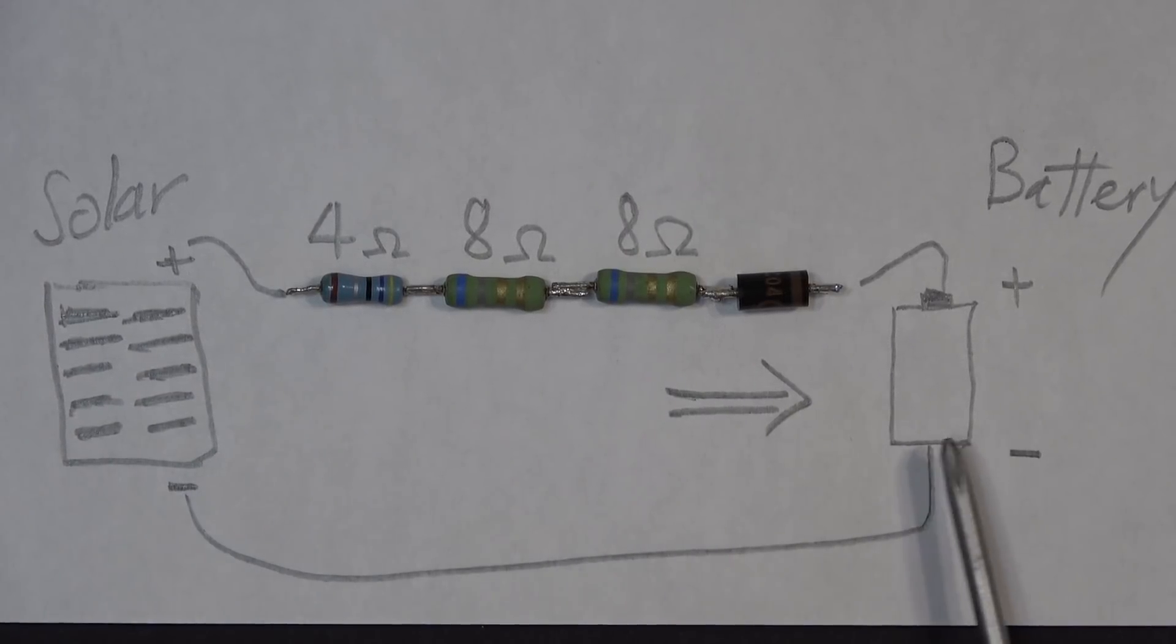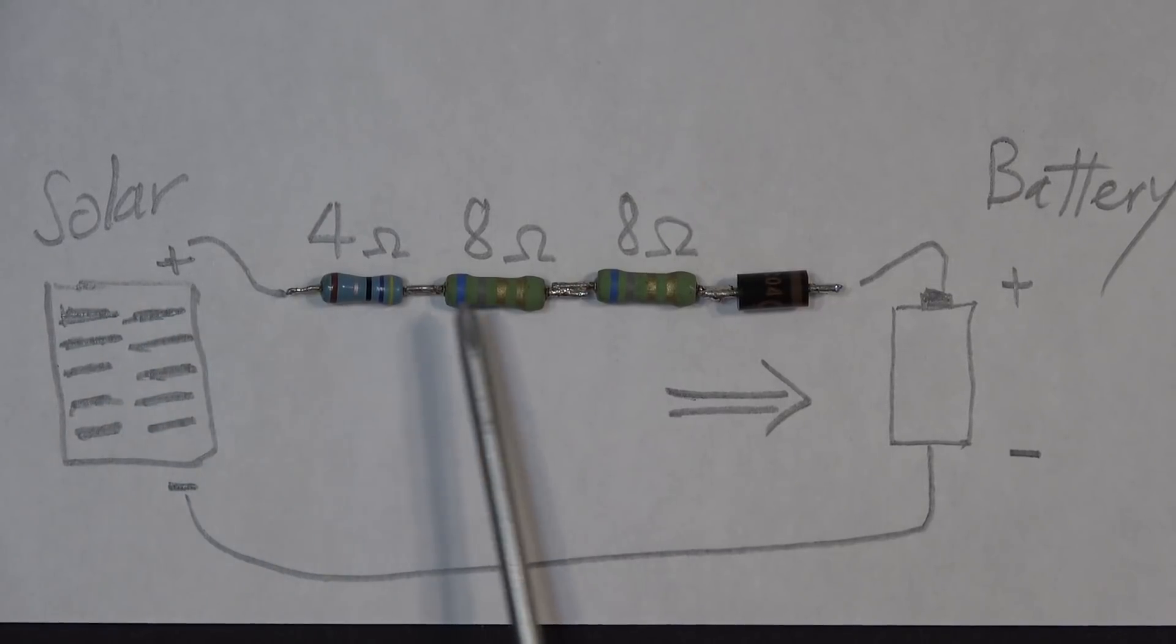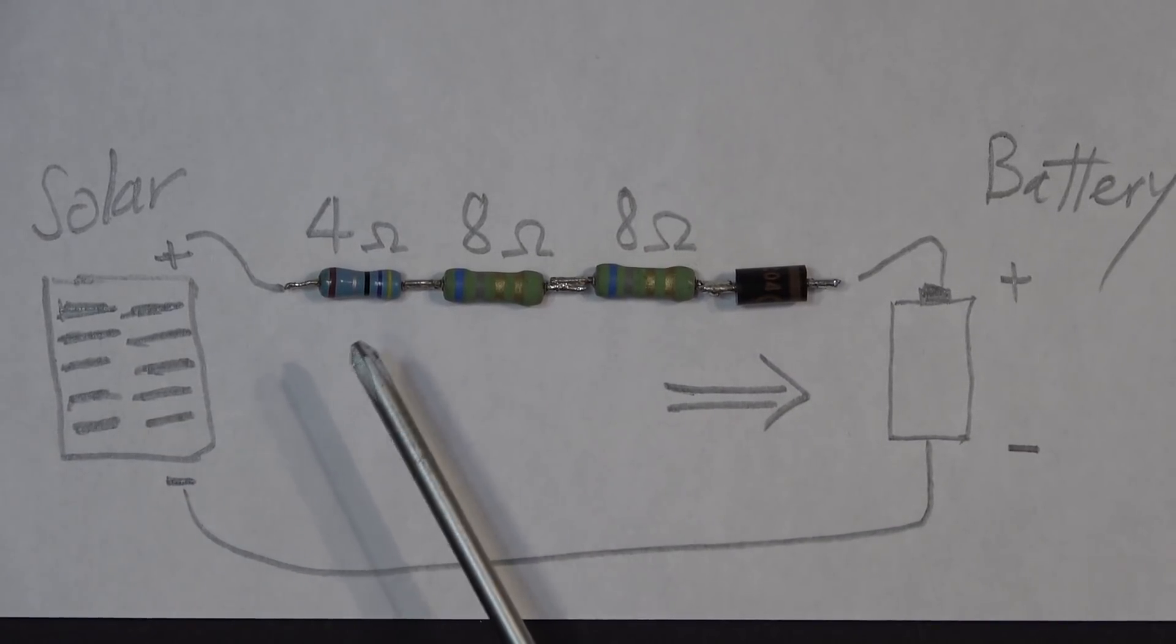The positive terminal from the solar goes through this series and then goes to the positive for the battery. The total resistance of all these resistors connected in series is the sum of all the resistors. In this case we got 4 plus 8 plus 8, that's 20 ohm total.